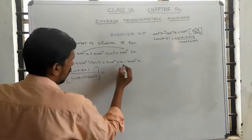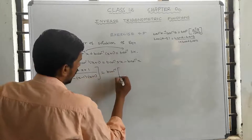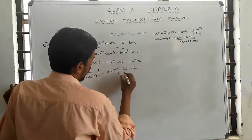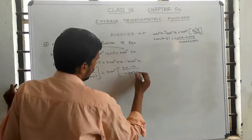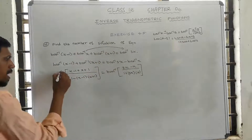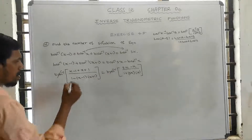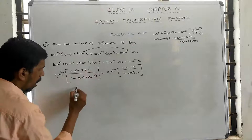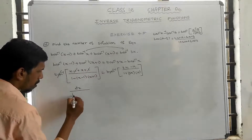This equals tan inverse a minus b, which gives 3x minus x divided by 1 plus 3x into x. After simplification, tan inverse cancels. The plus 1 and minus 1 get cancelled, leaving 2x divided by 1 minus x square minus 1.